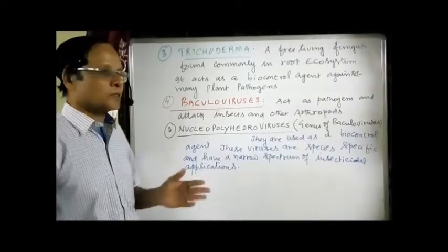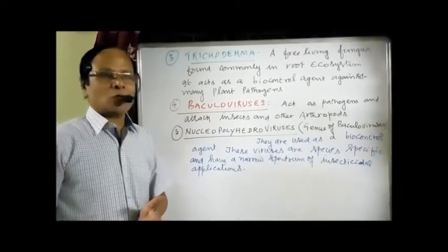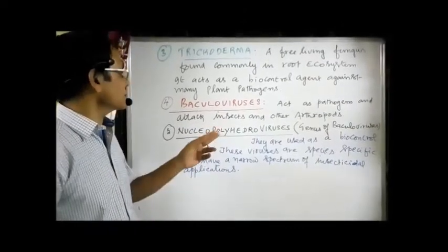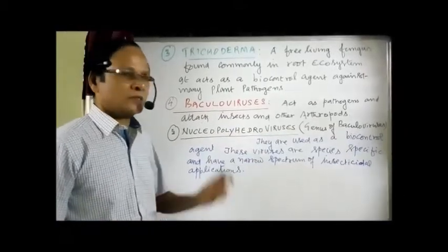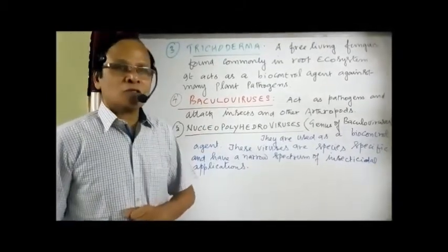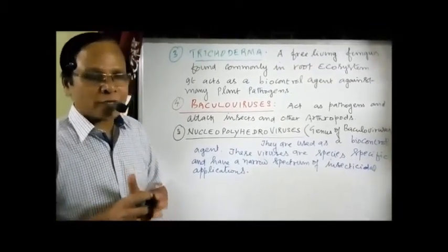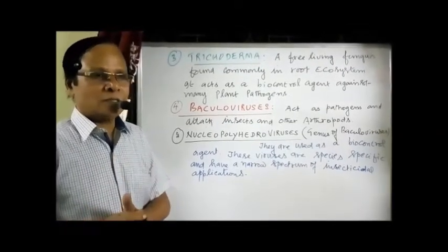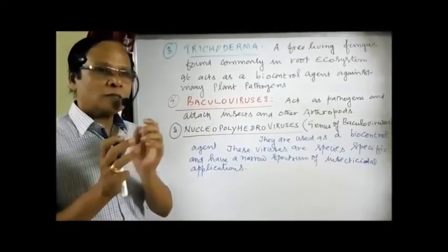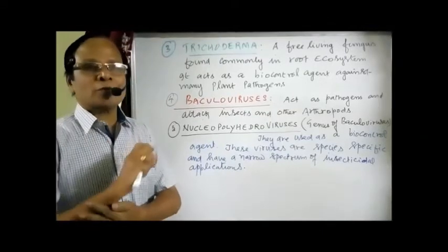The next example is Baculoviruses. They act as pathogens and attack many insects and other arthropods in the phylum Arthropoda. One genus of baculoviruses is Nucleopolyhedrovirus. These Nucleopolyhedroviruses are also used as biocontrol agents. These viruses are highly species-specific and have a narrow spectrum of insecticidal applications — they do not have a broad spectrum of killing insects. They are species-specific and kill only a specific number of particular insect species.